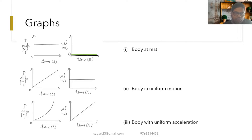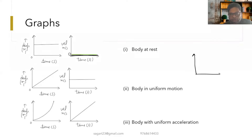Remember, whenever you draw a graph you have to write what physical quantity it represents and its unit. For a body having uniform motion, the displacement-time and velocity-time graphs look like straight lines, and since the velocity is constant, the velocity-time graph is a horizontal straight line.